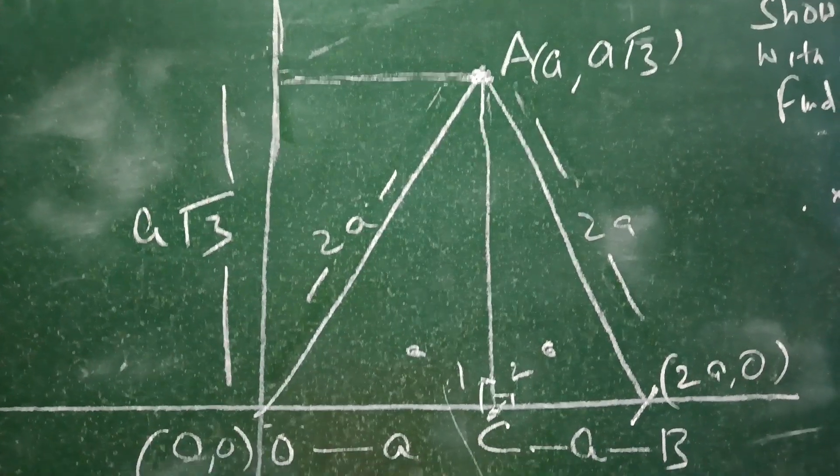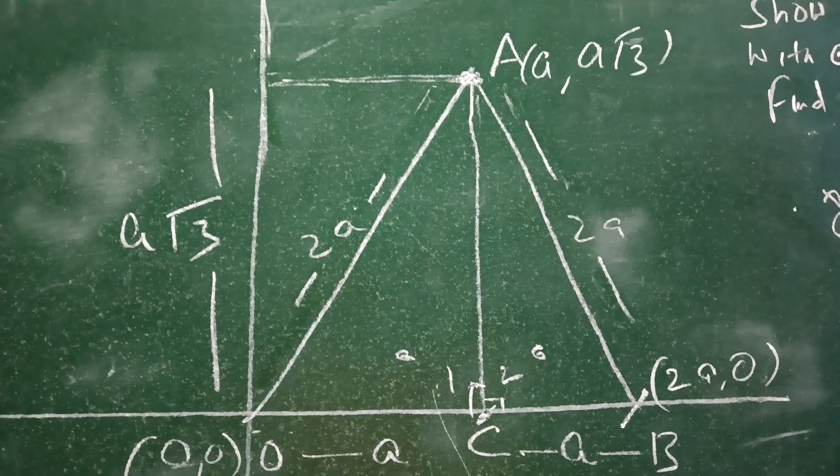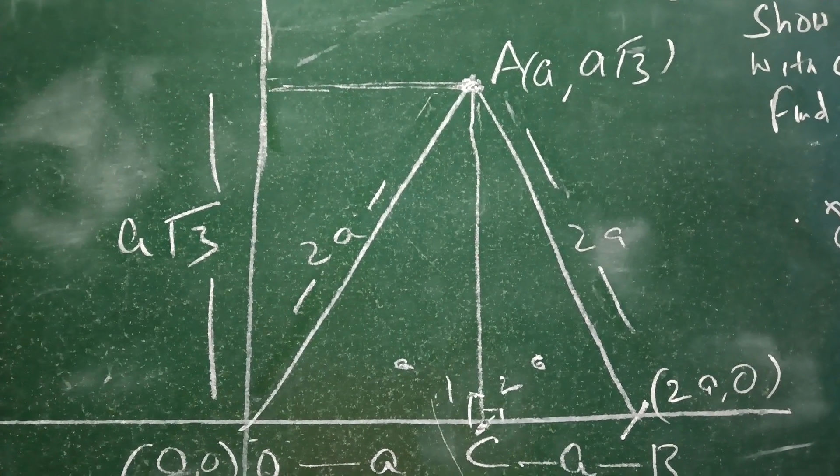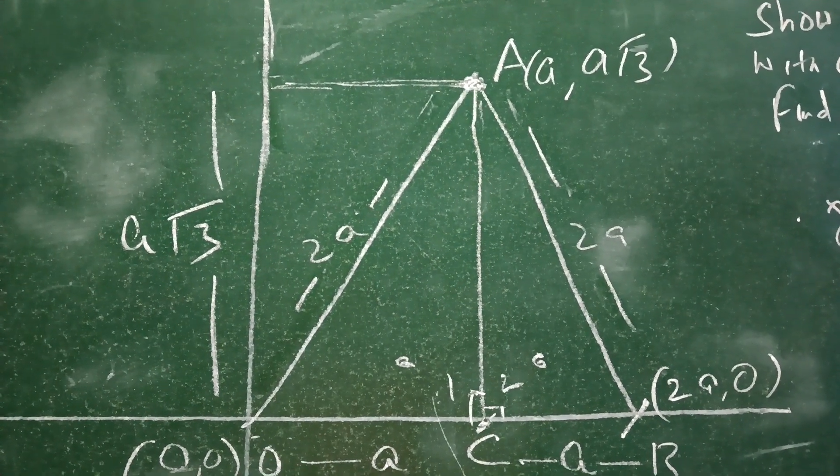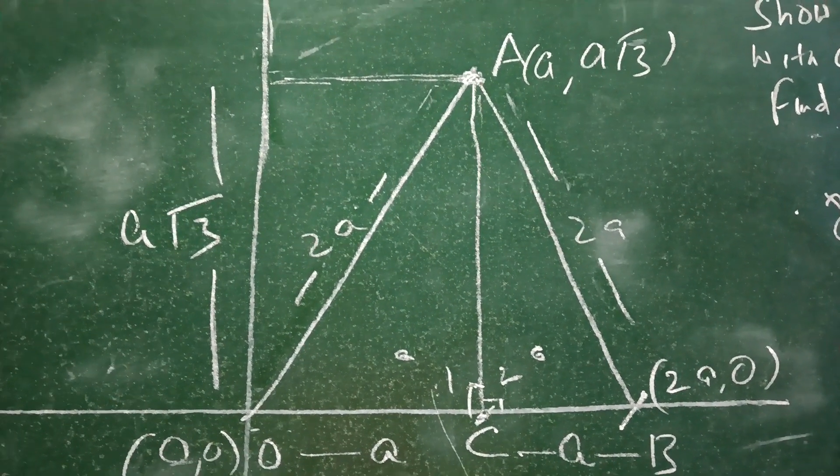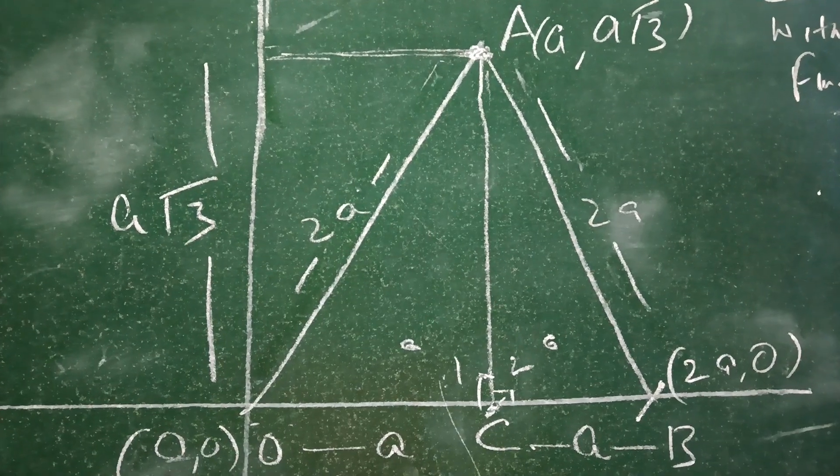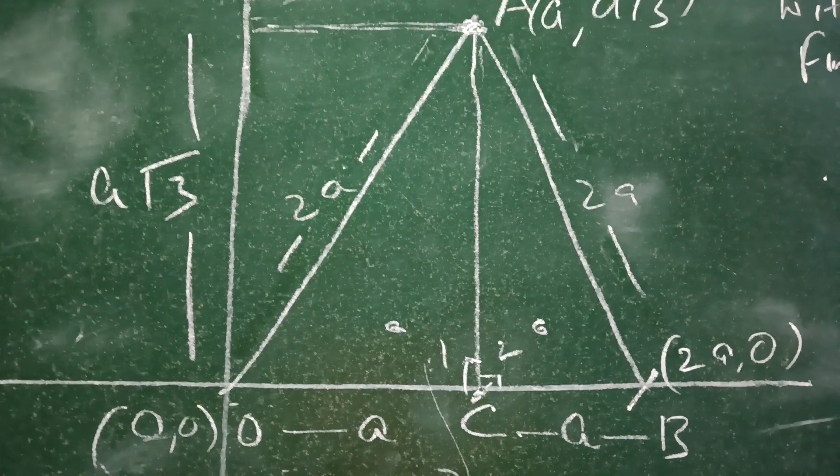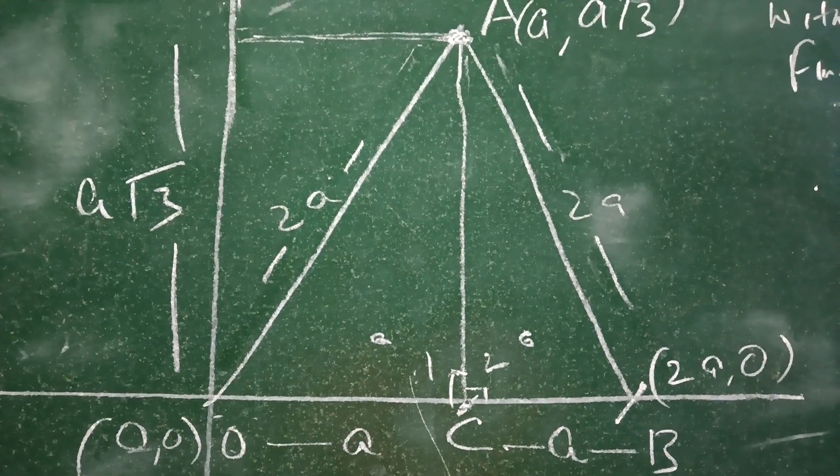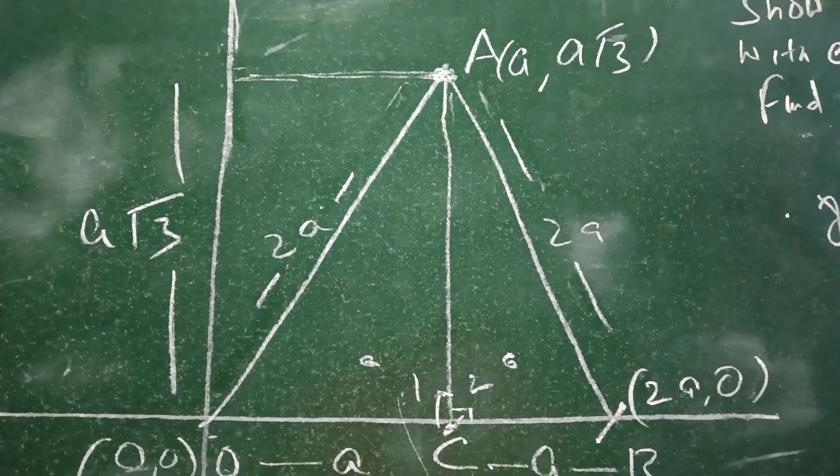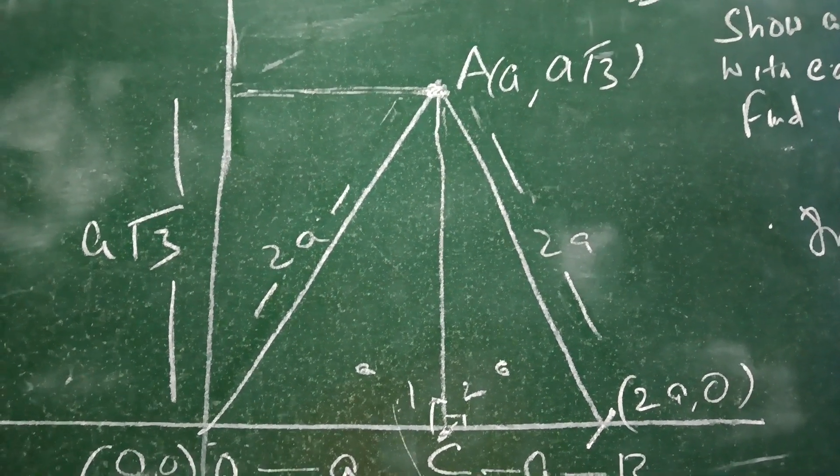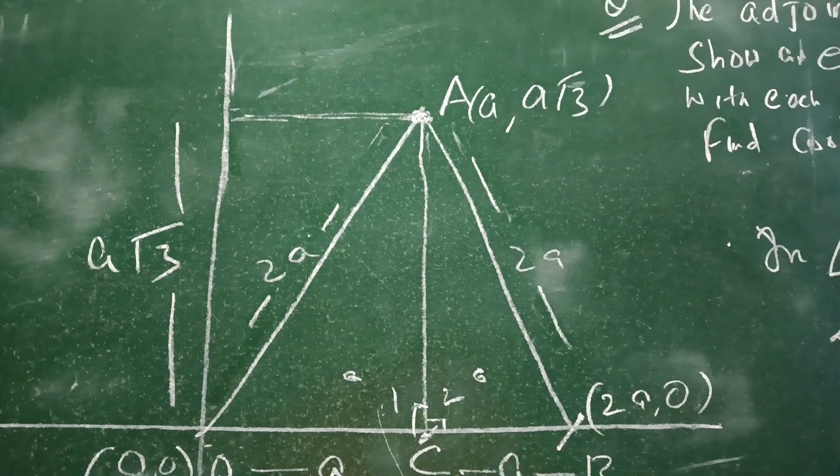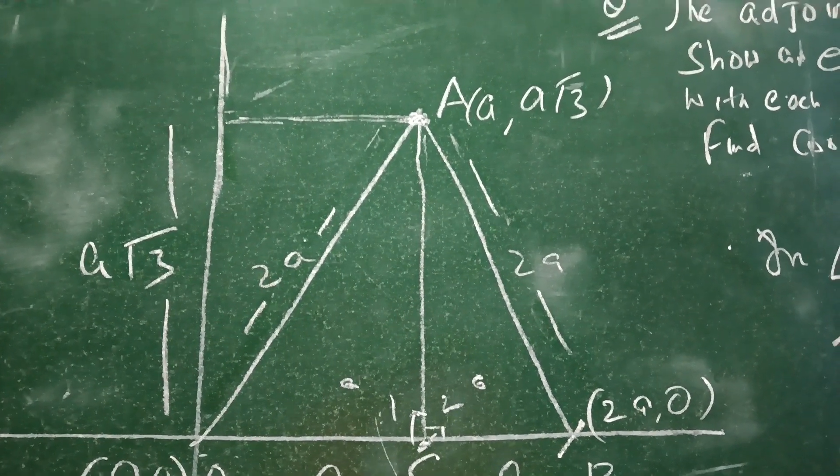So we have the value of AC is a√3. If you can see that AC is parallel with the y-axis, and C is on the x-axis, we have already said OC equals a, and the length of AC is a√3.